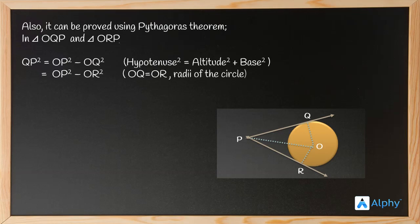OP² minus OR² (we have replaced OQ by OR because both are equal as they are the radii of the same circle). So OP² minus OR² gives us PR². Therefore, QP² equals